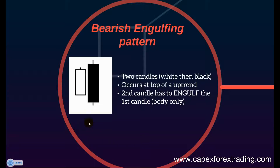The rule with the bearish engulfing pattern is that the second black candle has to engulf or cover the prior first white candle. It only has to engulf the body of the white candle rather than the wicks, no matter how long they are. So this small wick that you see here can be bigger than the black candle itself, but as long as the black candle's body engulfs the white candle's body, this qualifies as a bearish engulfing pattern.